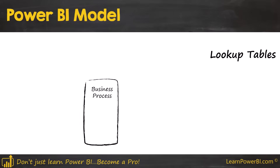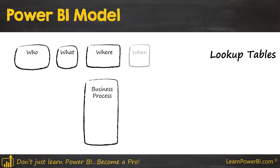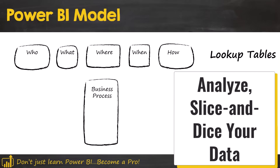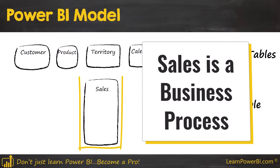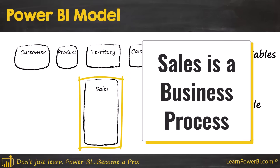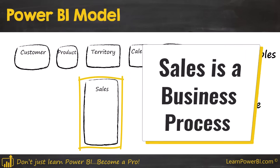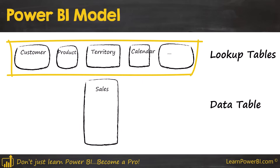The lookup tables are the who, what, where, when, how. And these are the ones which help us analyze and slice and dice and really understand the business process — look at it from a lot of different perspectives. Sales is a business process, so that's what we were capturing in that data table. And our lookup tables — who, what, where, when, how — in this case have been customer, product, territory, and calendar.